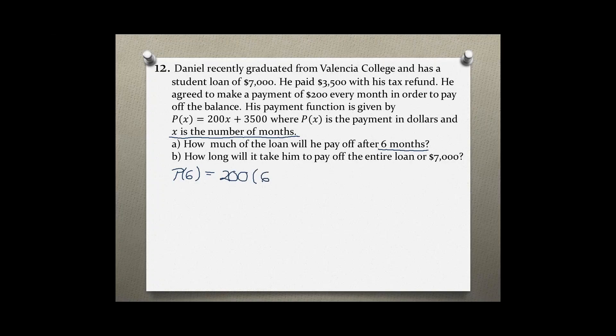200 times 6 plus $3,500. 200 times 6 is $1,200 plus $3,500 which equals $4,700. So this means after 6 months, he paid off $4,700 of his loan.